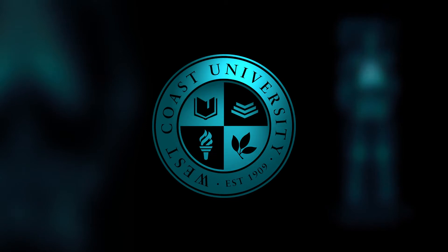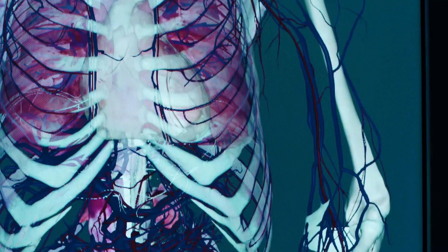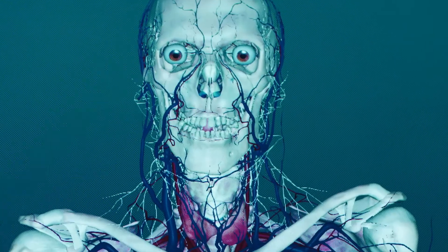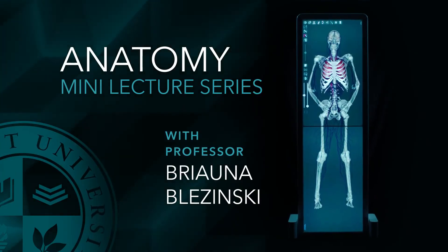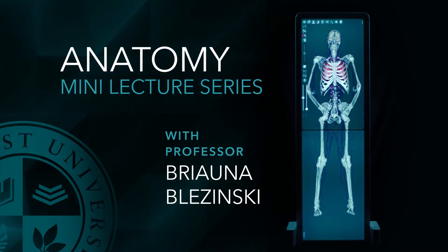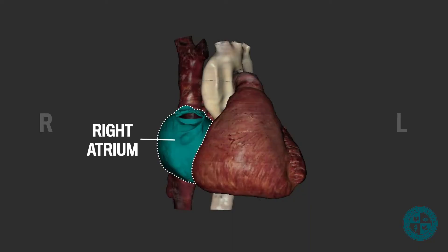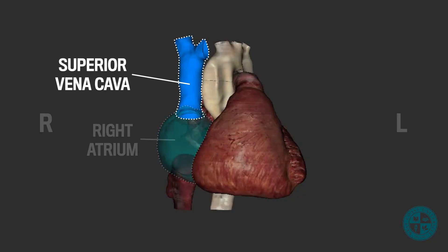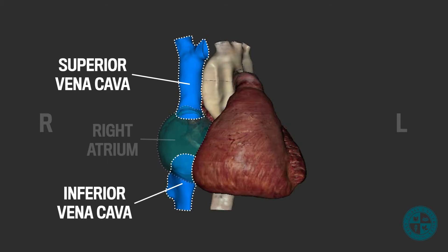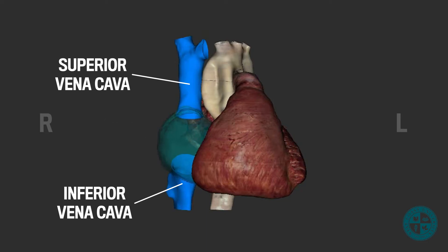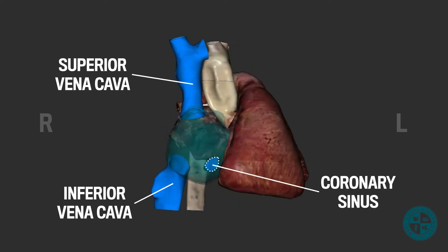Oh, the things you'll see! Starting at the right atrium, we can see the superior vena cava on the superior aspect, the inferior vena cava on the inferior and posterior aspect, and the opening to the coronary sinus inferior to the inferior vena cava.